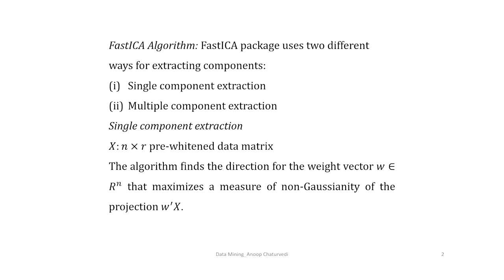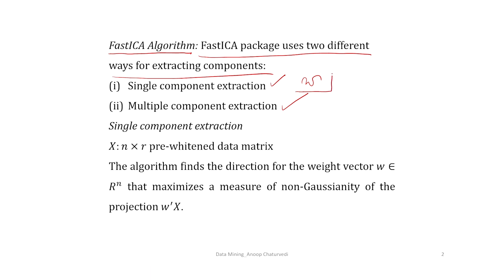For obtaining the unmixing weights w's, we use the fast ICA algorithm. The fast ICA package actually uses two different ways of extracting components: single component extraction and multiple component extraction. In single component extraction, we find a single weight w and extract a single component. In multiple component extraction, we jointly find a set of weights w's and extract multiple components.